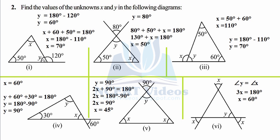In the first part of question two, we use two concepts: the exterior angle property and the angle sum property. First, find y: since it makes a linear pair with 120°, y equals 180 minus 120, so y equals 60 degrees. Now using the angle sum property: 60 plus 50 plus x equals 180. Adding gives 110; transposing: 180 minus 110 equals 70 degrees. So x equals 70° and y equals 60°.